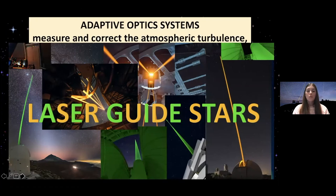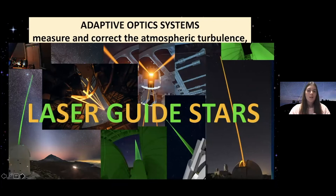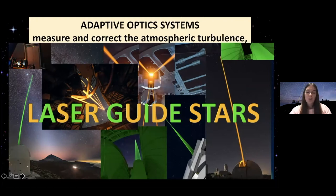We use laser guide stars to create a reference on the sky to measure the atmospheric turbulence with our wavefront sensor in the adaptive optics systems and correct for this atmospheric turbulence. By looking at this image, which colors do you think we use in these lasers to generate these stars? Exactly — green and orange. We are going to continue our journey by explaining the two different types of laser guide stars that we can create.